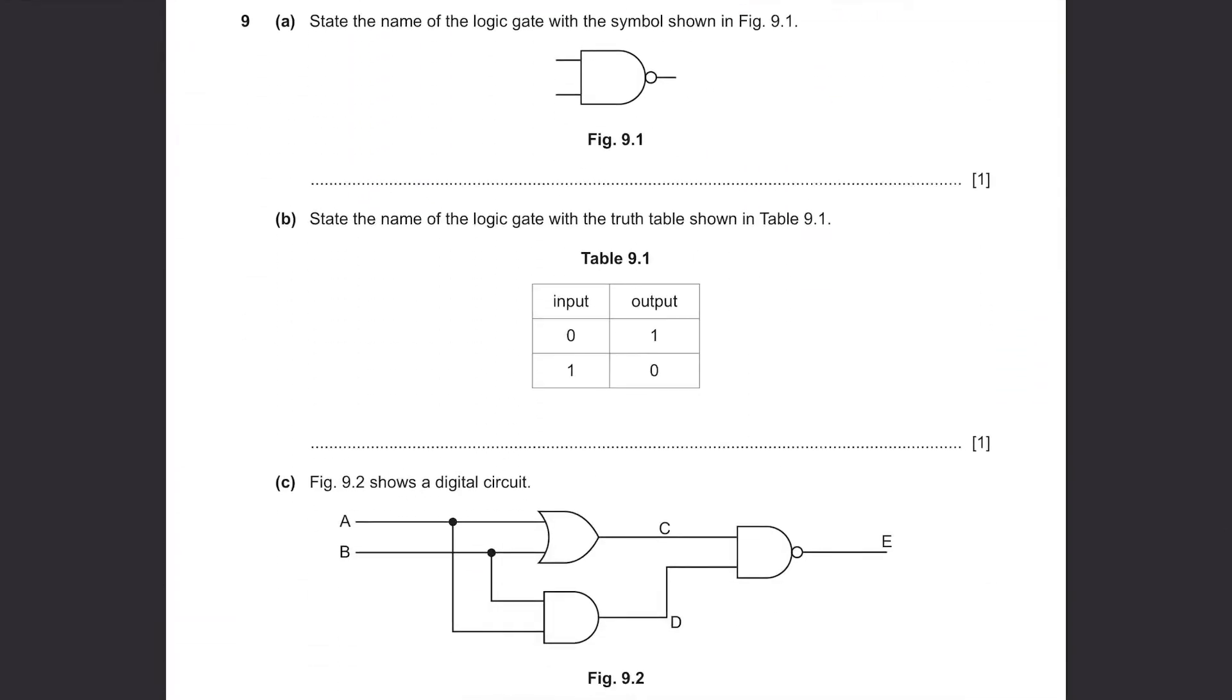Question 9, Part A. State the name of the logic gate with the symbol shown in figure 9.1. This is a NAND gate. Be careful of the small circle in front. Part B. State the name of the logic gate with the truth table shown in table 9.1. The output is exactly opposite of the input, which means it's a NOT gate.